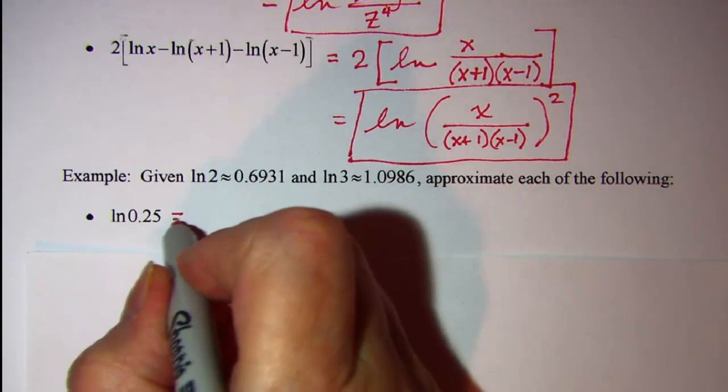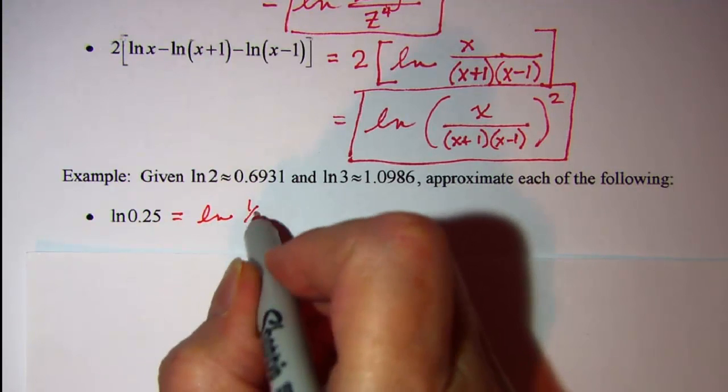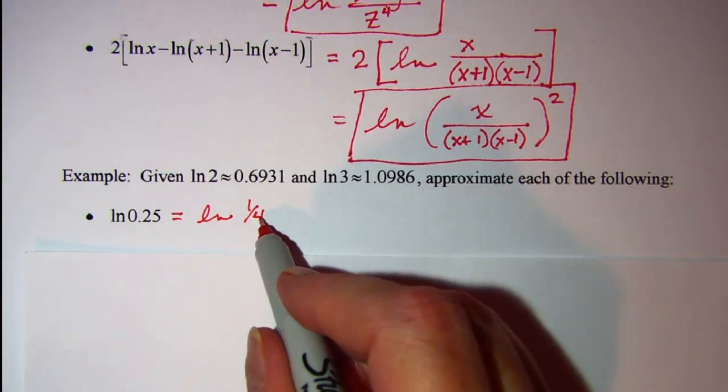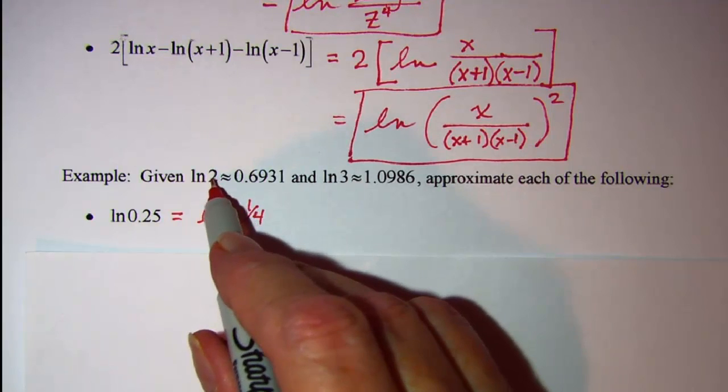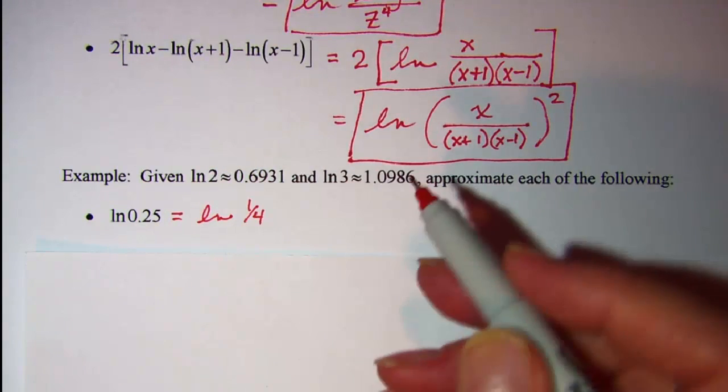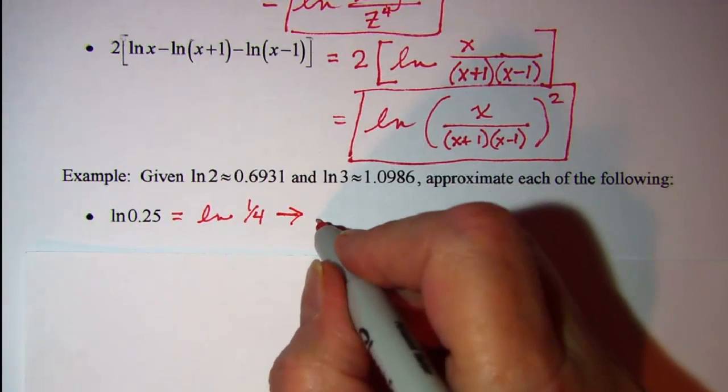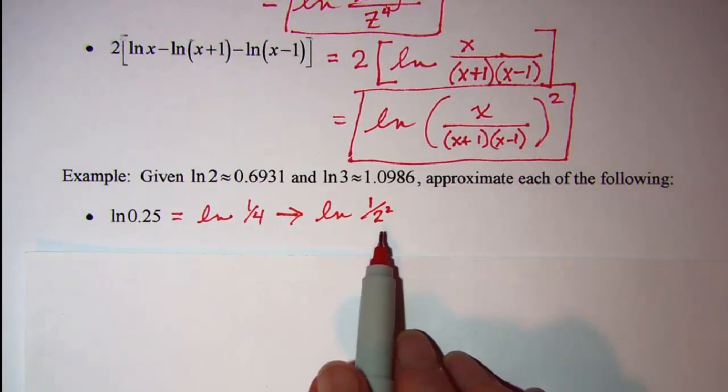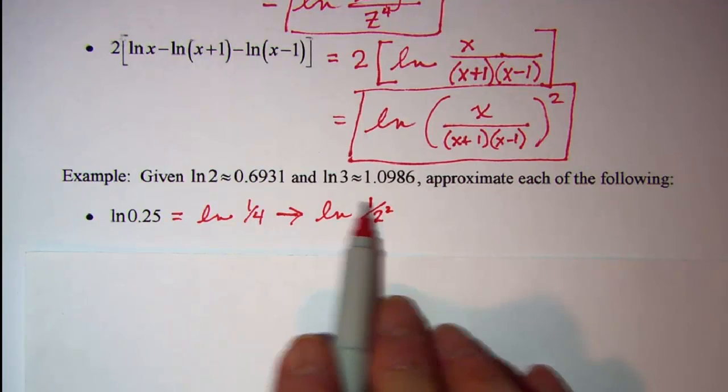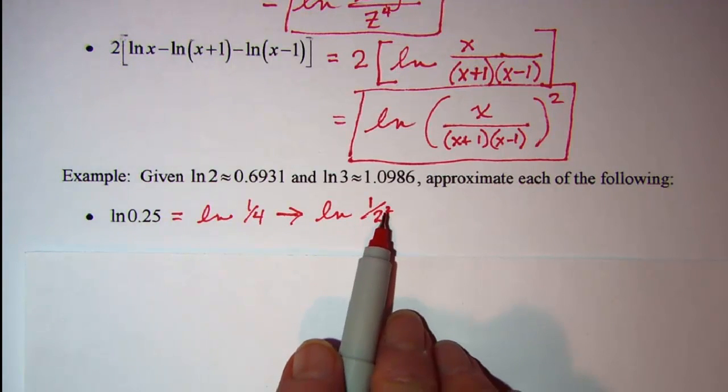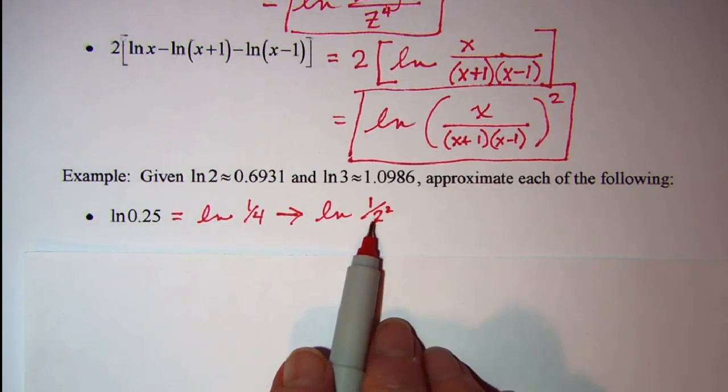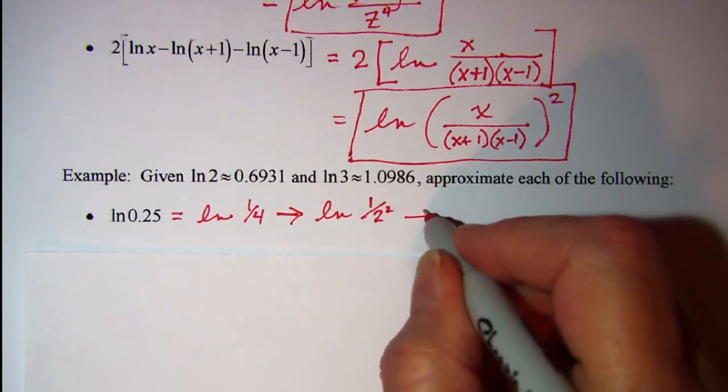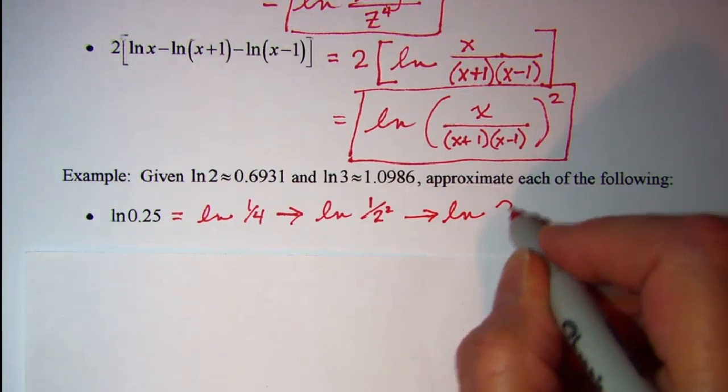Remember that 0.25 is the same as 1 fourth, so let me write that. And then 4 is the same as 2 squared, so that's going to get me closer to being able to use this. So this is ln 1 over 2 squared, and then if I want to bring that and make it 2 to a power, I would need to negate this exponent to bring this denominator up to the numerator. So I can do that, that is the same as ln of 2 to the negative 2.